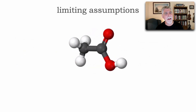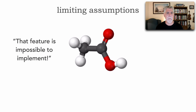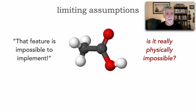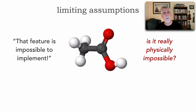Another limiting assumption is that of physics. A lot of times we say a feature is impossible to implement, but we should ask: is it really physically impossible, or just a very difficult problem to solve? There are things that are physically impossible — like transferring data across the world in several nanoseconds, since light doesn't travel that fast. But too often we say something is impossible when what we really mean is that it's overly difficult.